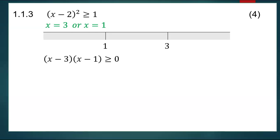It can be any value, as long as it is less than one. Try by all means to use integers rather than fractions and decimals — that doesn't mean you can't use them, just try to avoid them. The lowest value that is easiest for me was zero. You could have chosen negative one, negative two, or any value less than one. We know that when x equals one the whole equation equals zero, but we don't know how the equation behaves when x is less than one, so I'll substitute zero into the factorized equation.